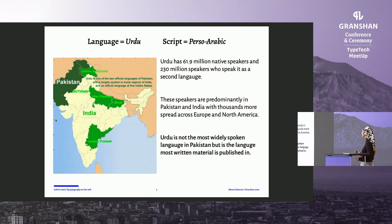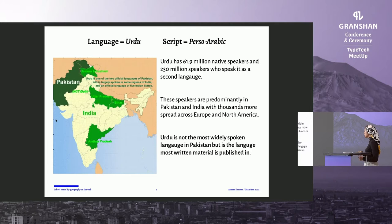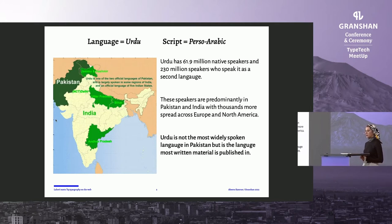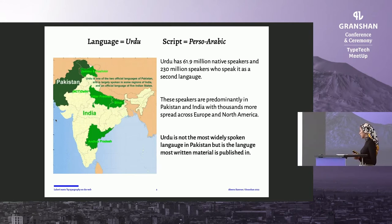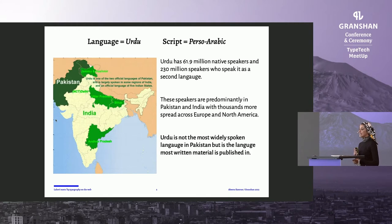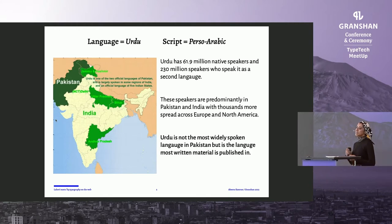Urdu has 61.9 million native speakers, and even more speakers that speak it as a second language. While these speakers are predominantly in Pakistan and India, because of diaspora, there are thousands more all over the world. Most importantly, Urdu is not the most widely spoken language in Pakistan, but it is the language all printed matter is set in — it is the print language around which culture and identity forms itself in Pakistan.